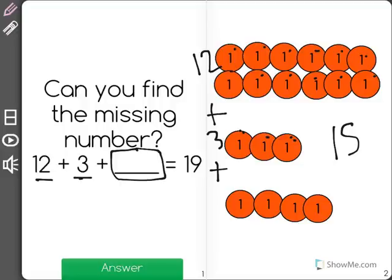Then I'm just going to keep counting on to see how many I have to add to get to 19. 16, 17, 18, 19.